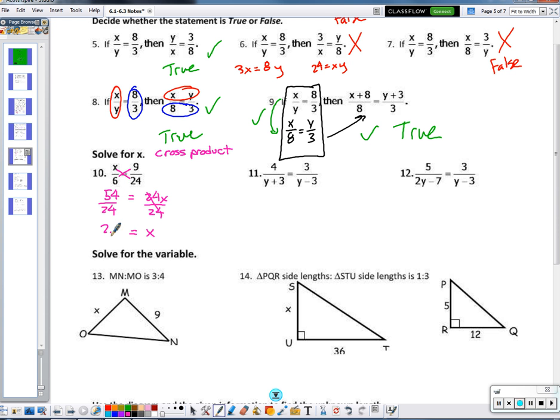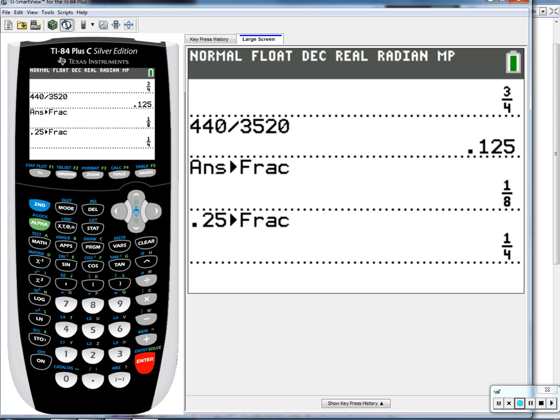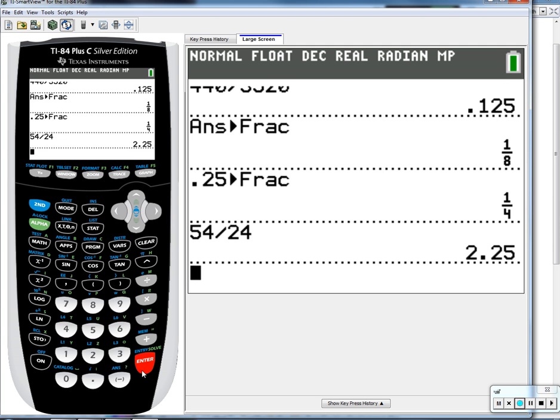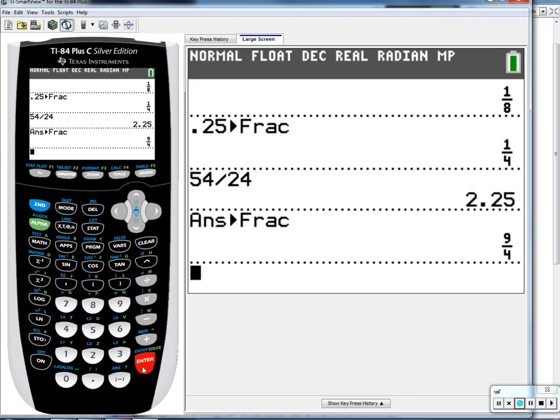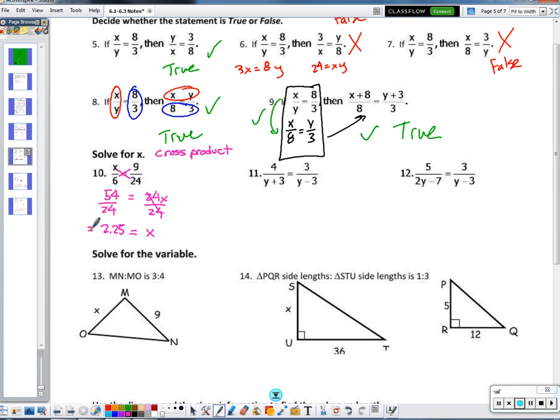Or as a fraction, that would be what? Use my handy-dandy calculator here. 54 divided by 24. 9 fourths. Either answer would be acceptable. In this case, either answer would be acceptable.